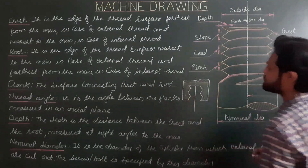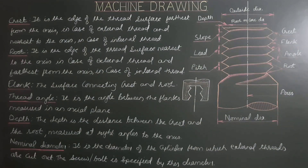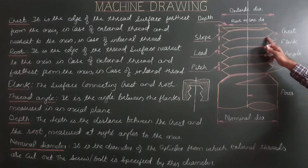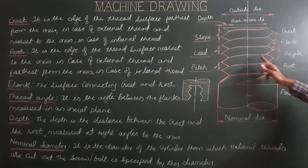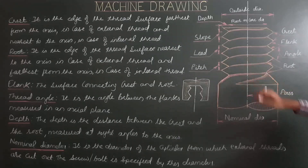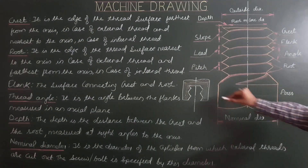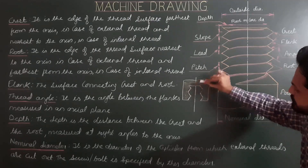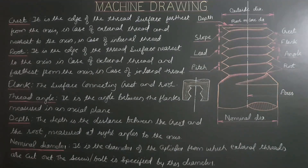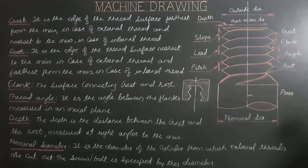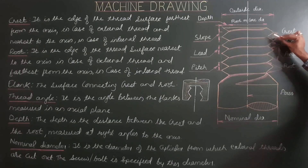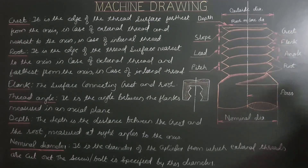Root is the edge of the thread surface nearest to the axis in case of external thread, and farthest from the axis in case of internal thread. Flank is the surface connecting the crest and the root — from crest to root and root to crest, these surfaces are flanks.